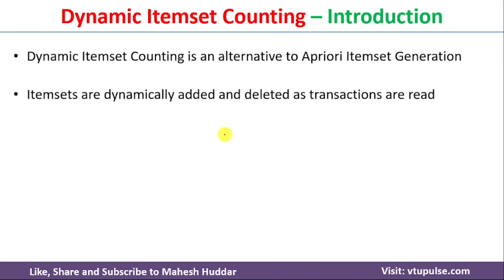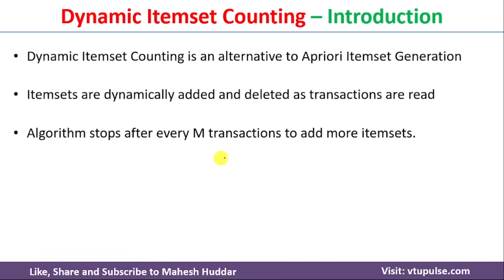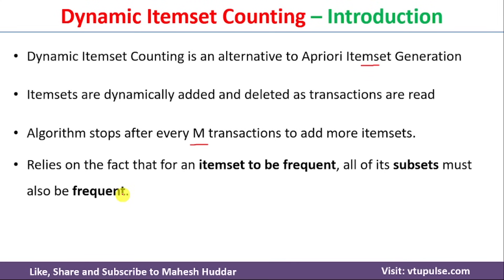Item sets are dynamically added and deleted as transactions are read in dynamic item set counting. In the a priori algorithm, we consider all transactions at a time to generate item sets. But in this case, we consider only M transactions at a time. Dynamic item set counting relies on the fact that for an item set to be frequent, all its subsets must be frequent.